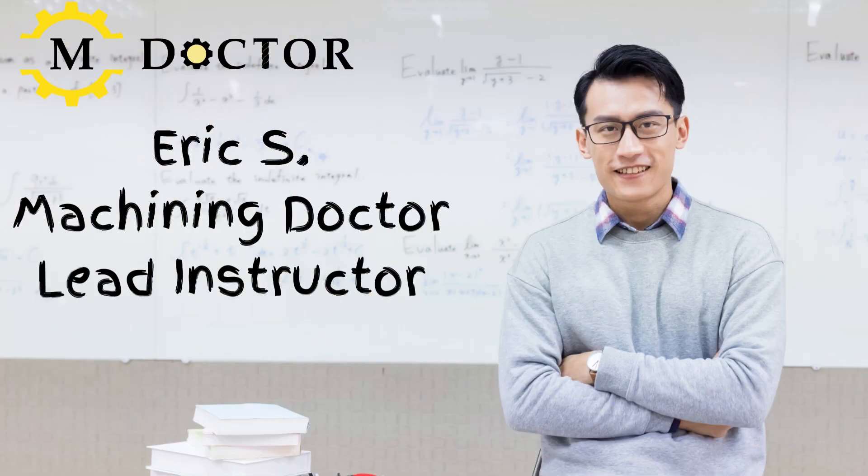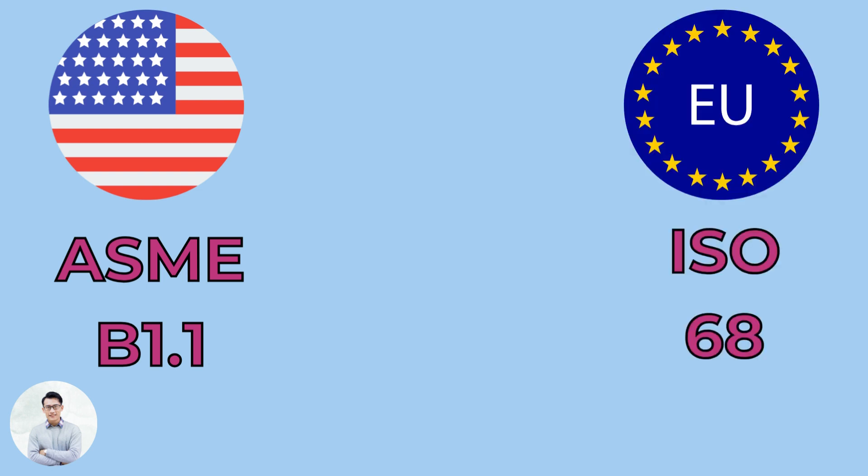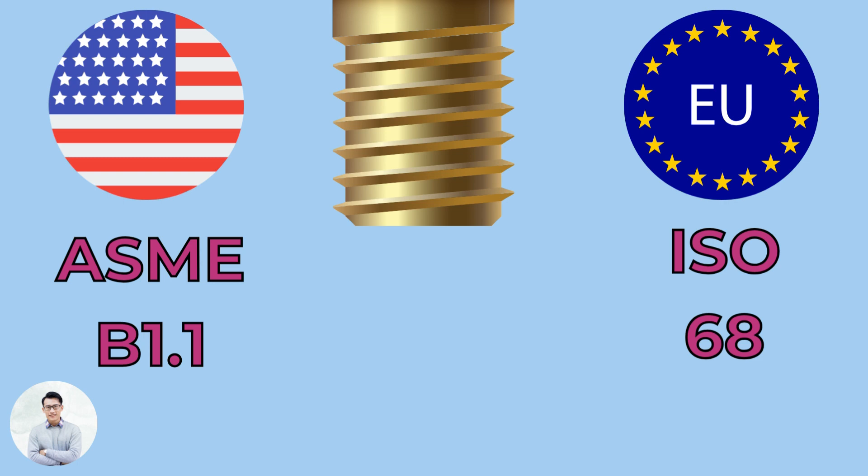Hello everybody, 90% of the threads we encounter are the standard inch threads based on ASME B1.1 and metric threads based on ISO 68. The basic thread profile of both systems is identical. However, each system comes with its own set of advantages and disadvantages that depend on our requirements.